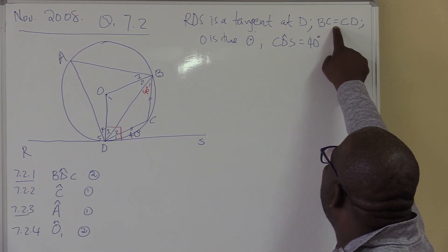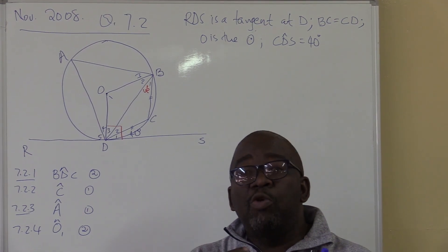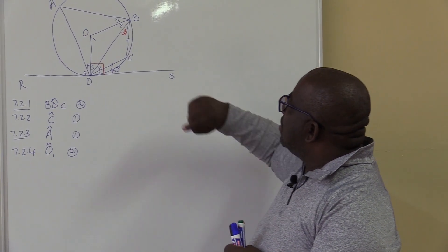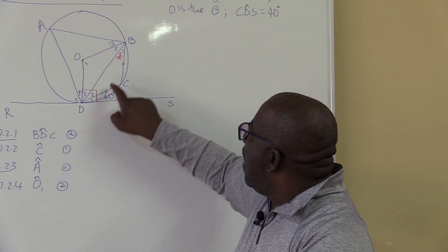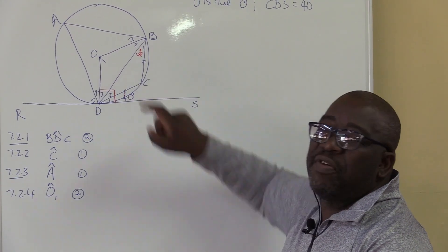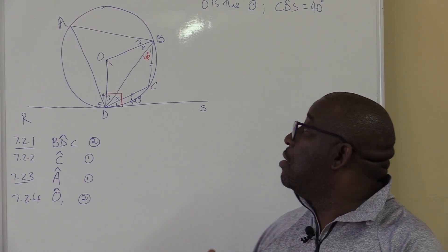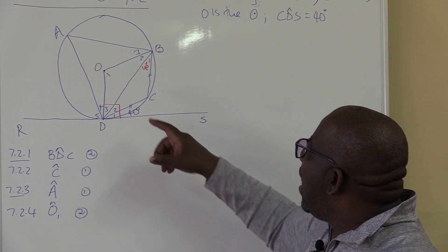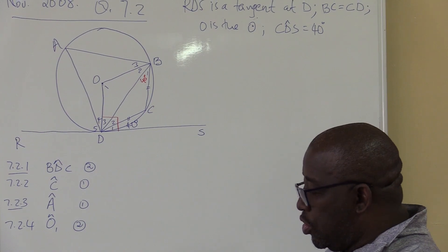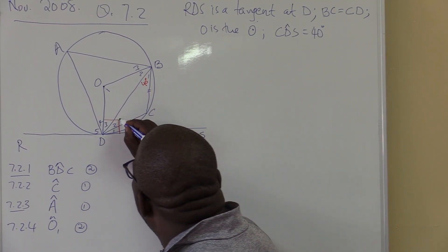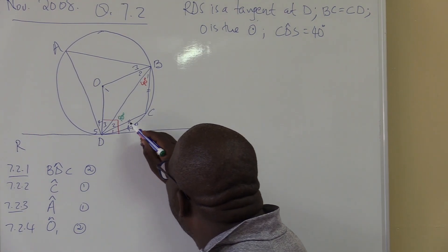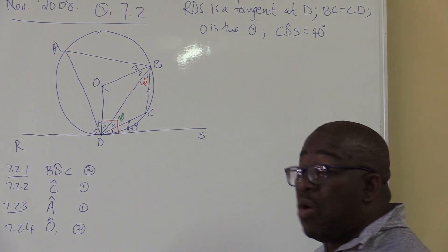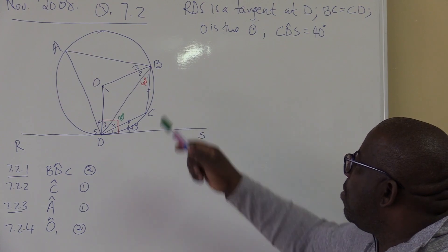Let's look at this next statement: BC is equal to CD. I'm emphasizing that most of the solution will come from the statements we're given. BC equals CD — I see a triangle here. What type of triangle is this? Going back to grade 9: BC equals CD means it's an isosceles triangle. Remember that angles opposite equal sides are also the same. So this angle is also equal to 40 degrees — that will be 40 degrees.